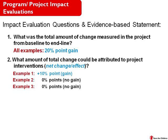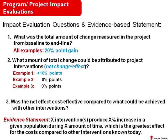The third question impact evaluation attempts to answer is: was the net effect achieved cost-effective compared to what could have been achieved with other interventions or activities? In examples two and three, where the net effect was zero, it's clearly not cost-effective. In example one, where the net change is a 10 percentage point gain, we must argue whether that gain was cost-effective for the amount of inputs required. Once we adequately answer these three questions, we can produce an evidence-based statement: X interventions produced a certain net increase in a given population over a certain period of time, which is the greatest effect for the cost compared to any other interventions known today.